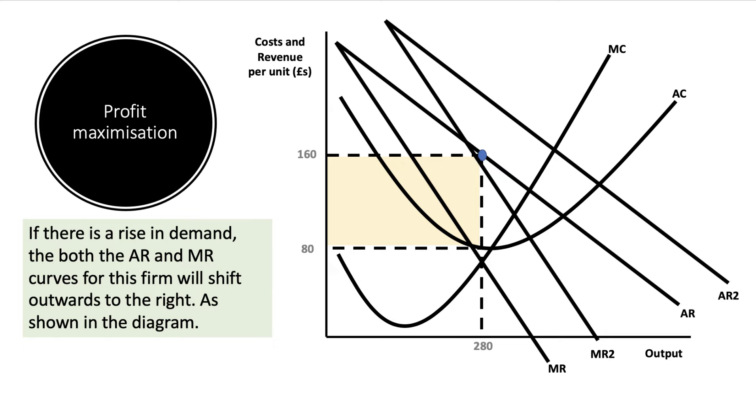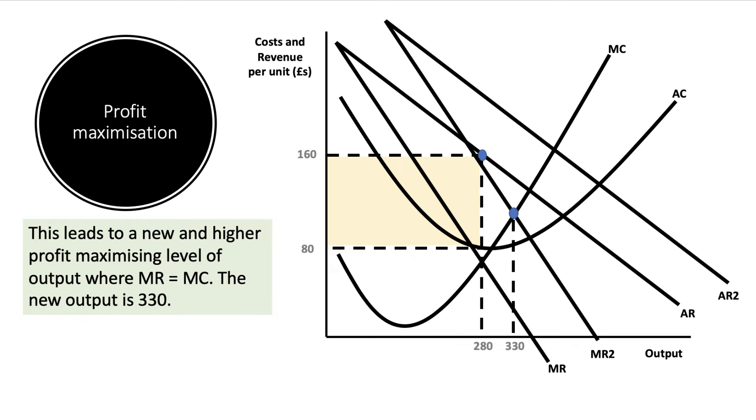The consequence of that is that the profit maximizing level of output where MR meets MC will increase. I've increased it to 330 units - can you see there the intersection between MC and MR2? Also, that means we can now sell those units at a higher price. I've assumed that we can sell 330 units at a price of 180 pounds, 20 pounds per unit higher.